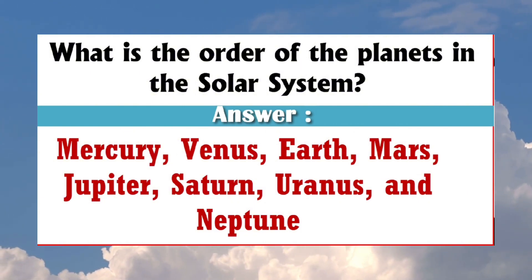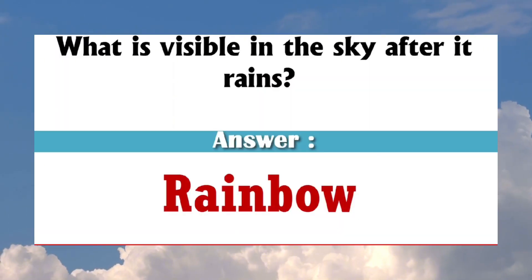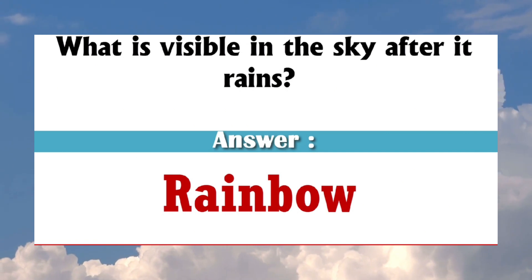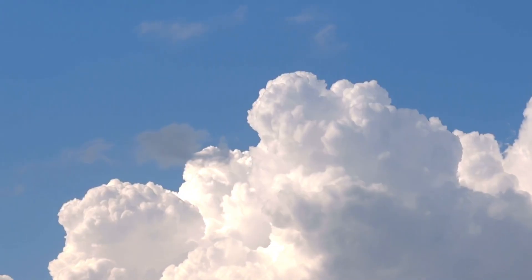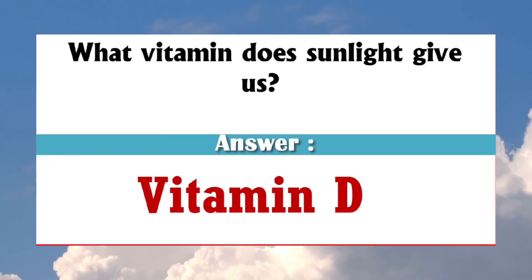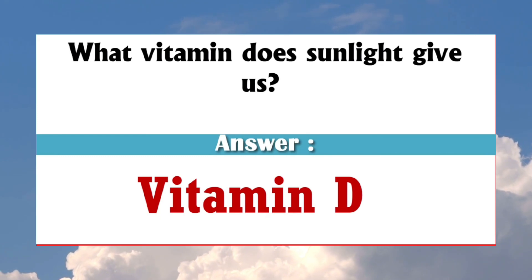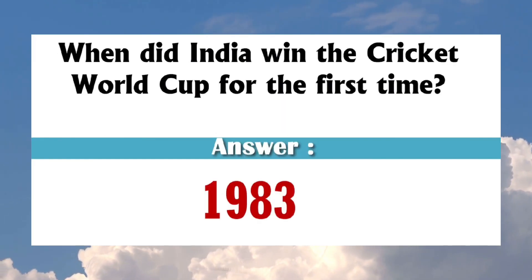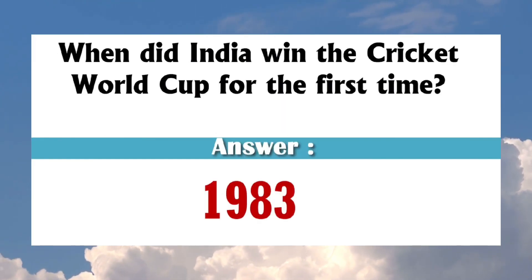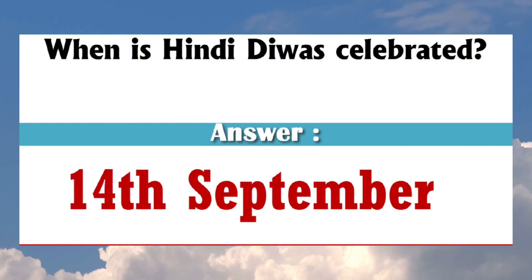Mercury, Venus, Earth, Mars, Saturn. What is visible in the sky after rain? Rainbow. What vitamin does sunlight give us? Vitamin D. When did India win the Cricket World Cup? 1983.